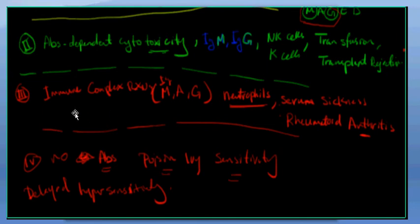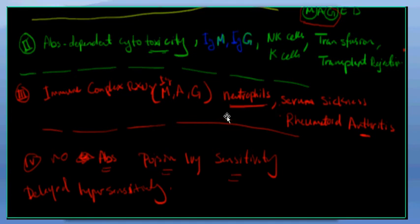Number three, type three, is the immune complex reaction. The immune complex reaction involves IgM, IgA, and IgG. The cells involved in immune complex reactions are neutrophils.